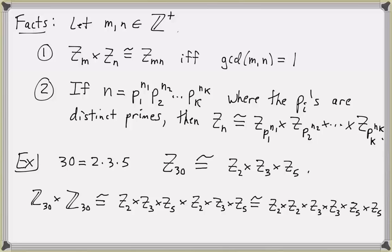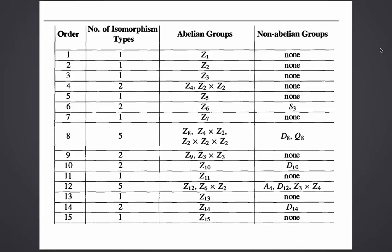We'll conclude by looking at a table of isomorphism classes for groups of small order, not limited to abelian groups — listing all finite groups of order 15 or less. The left column shows the order, the second column shows the number of isomorphism types. For example, there's only one isomorphism class each for orders 1, 2, and 3 — the abelian groups Z1, Z2, and Z3. The far right column lists non-abelian groups, and we see the smallest non-abelian group is S3.